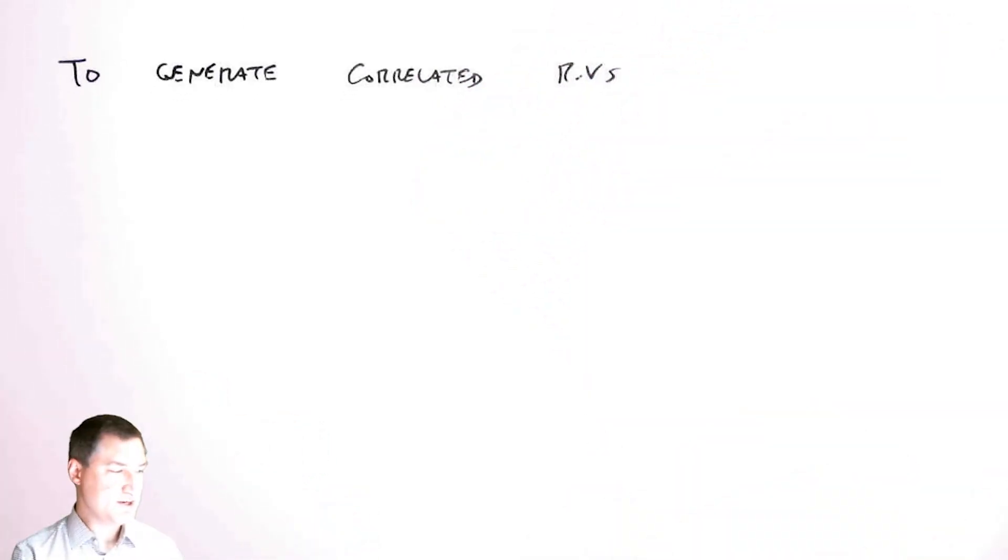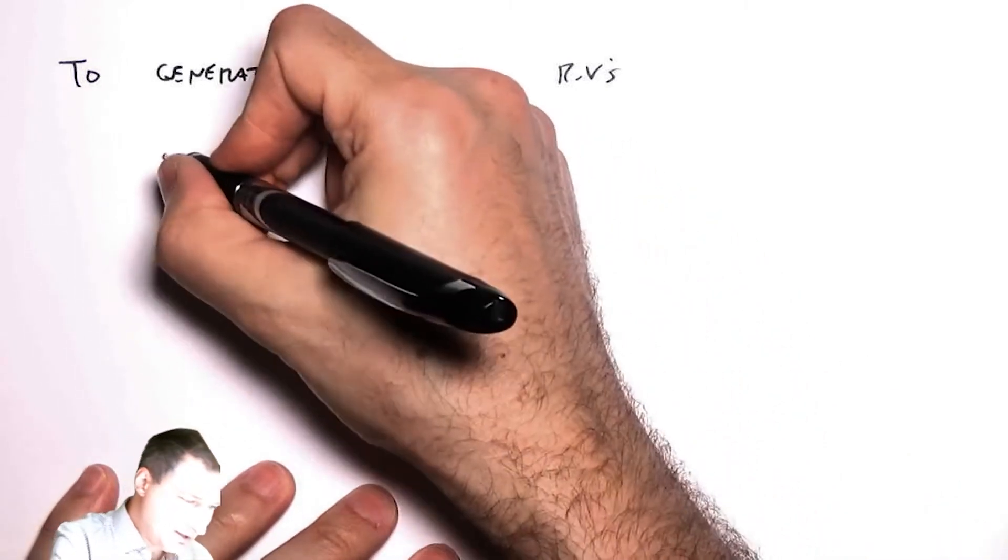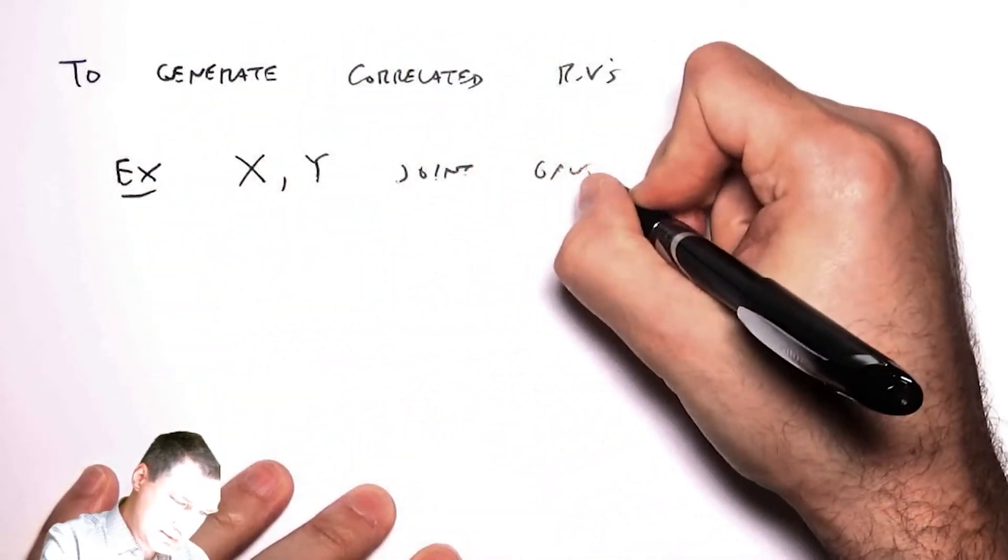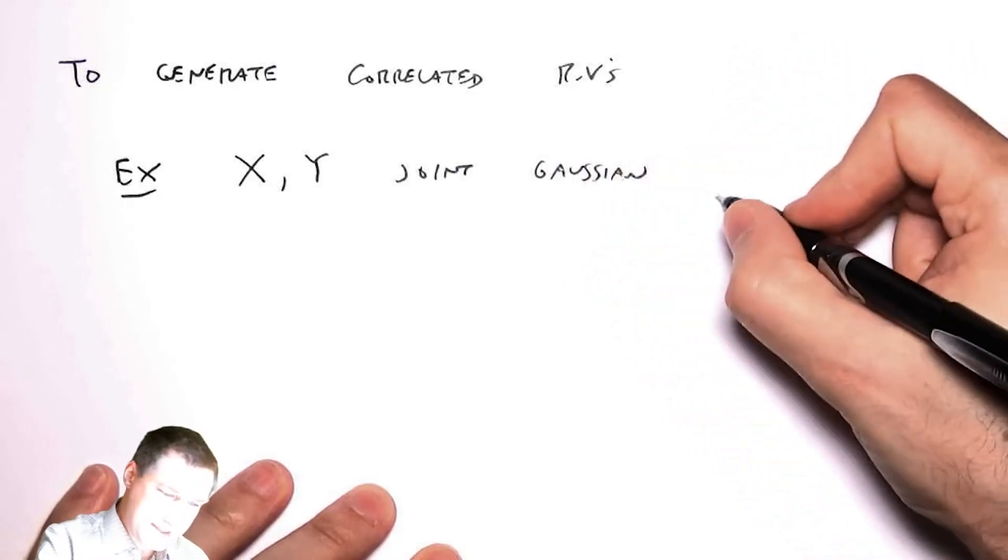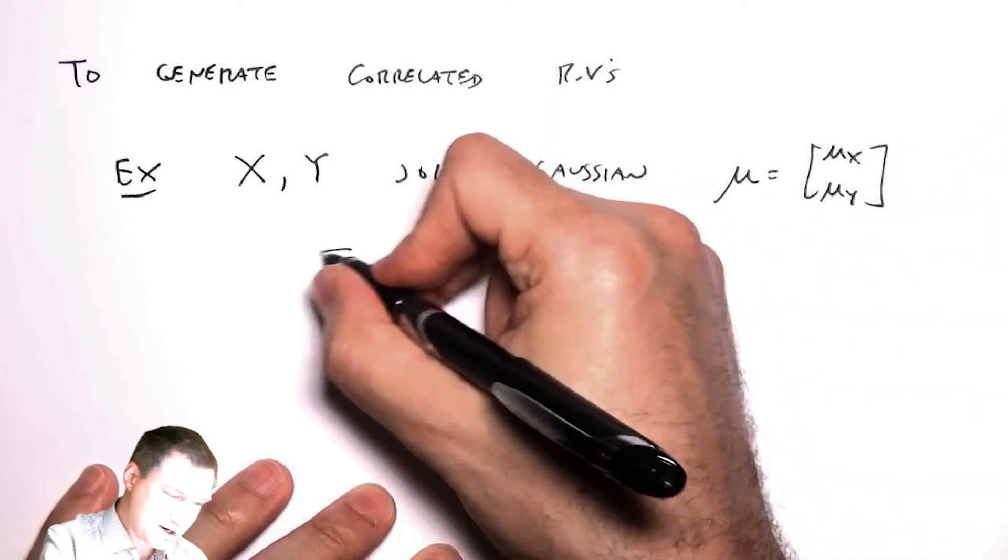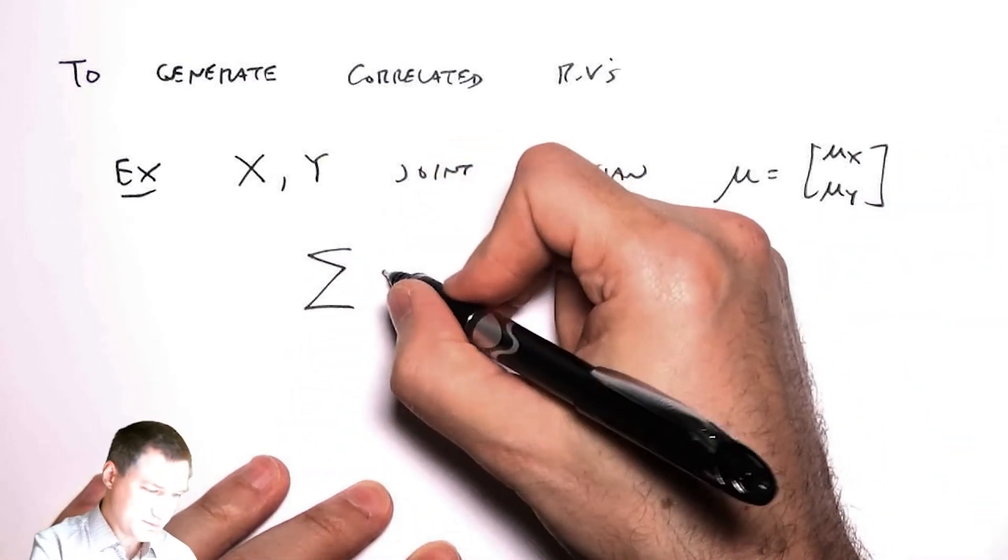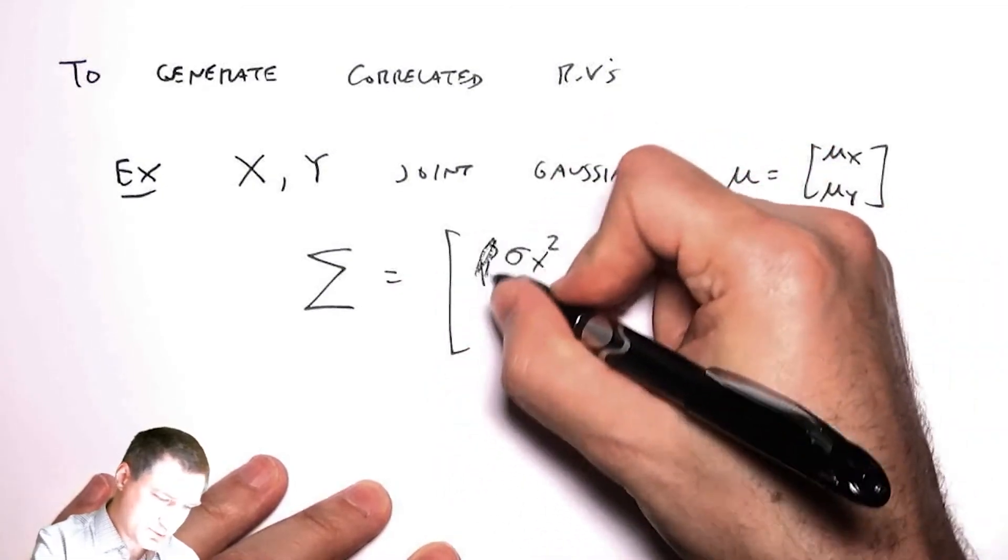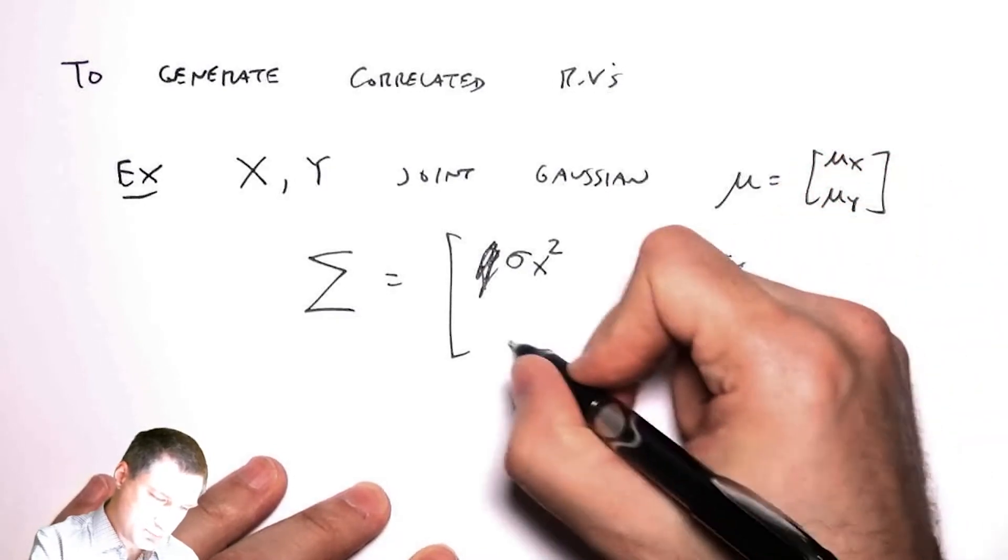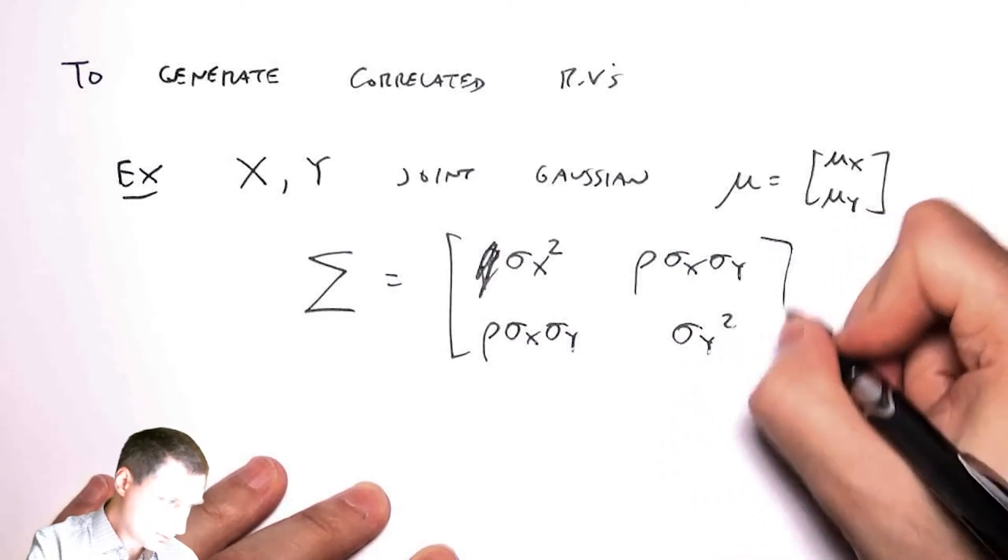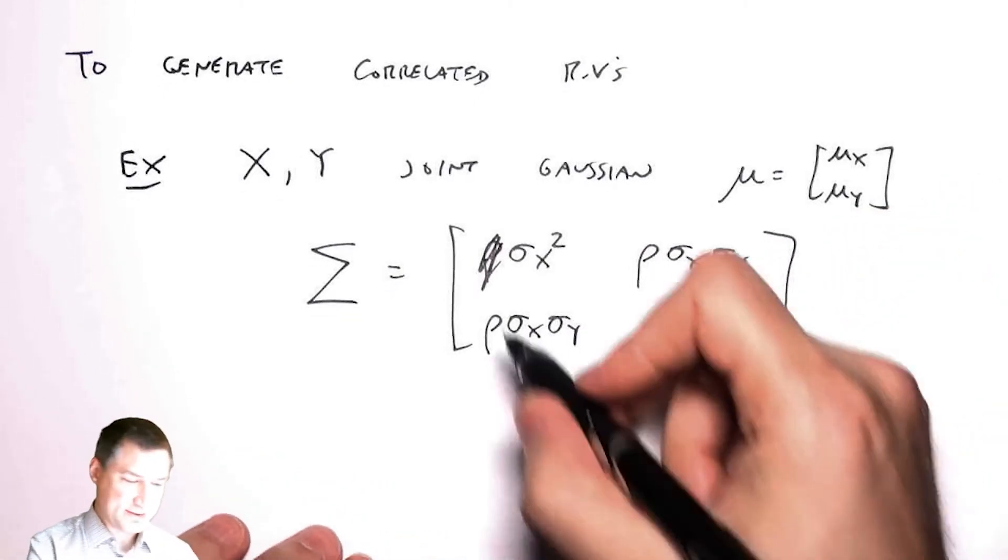Generally, this involves using the covariance matrix between the random variables. Let's suppose that x and y are jointly Gaussian, and they have these means, and I have the covariance matrix, which we talked about when we talked about the joint Gaussian. That involves the correlation coefficient and the two standard deviations.